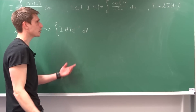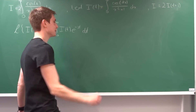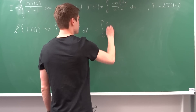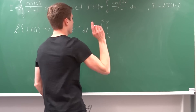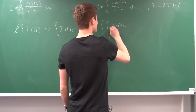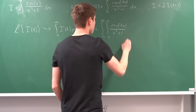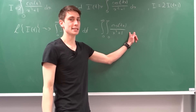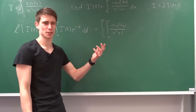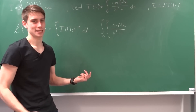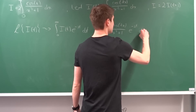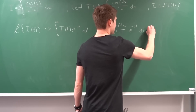Now we can plug in our definition for I(t). That gives us the integral from 0 to infinity of the integral from 0 to infinity of cosine of t times x over x squared plus 1 — and we interchange the dx and the e to the minus st factor, since in terms of x, e to the minus st is just a constant. So we bring e to the minus st to the inside, giving dx dt.